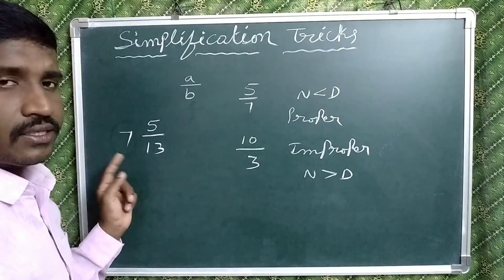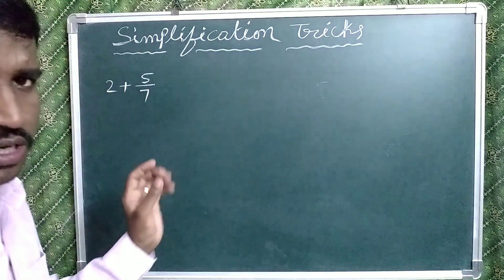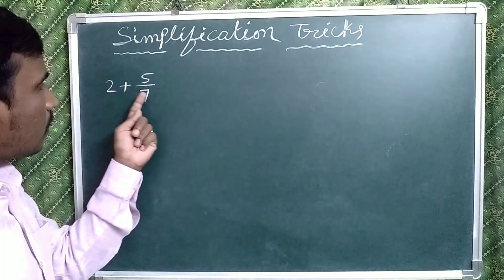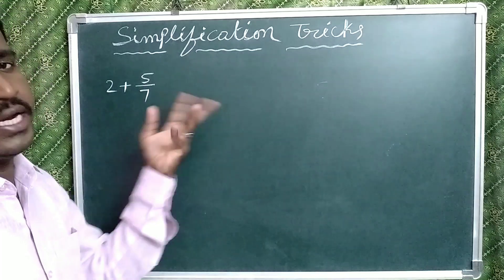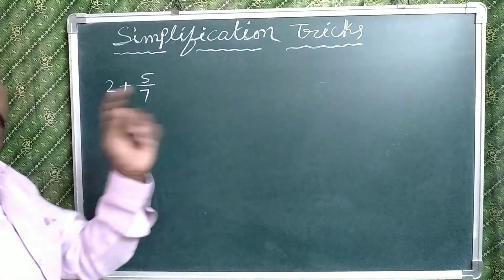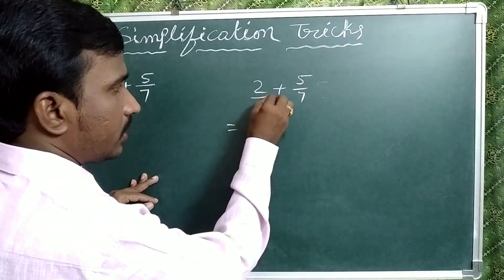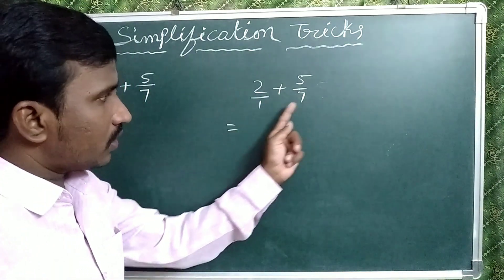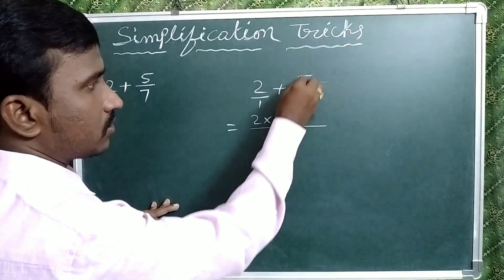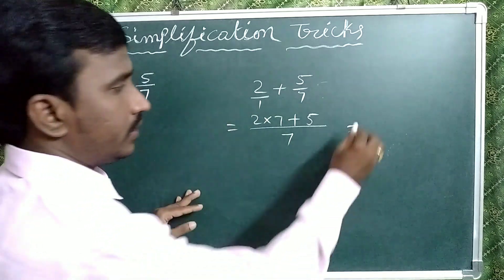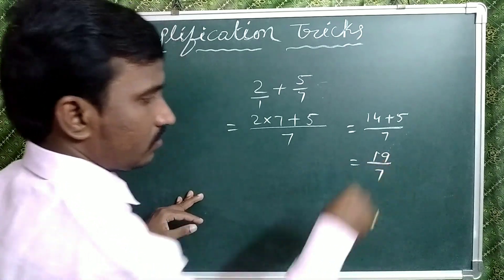Now let's discuss the shortcut for the first model. In this model we have one whole number and one proper fraction — whole number plus or minus proper fraction. How to solve these problems? For example: 2 plus 5 by 7. What is the denominator? 7. Take the LCM of 1 and 7, which is 7. Now 2 into 7 plus 5: 2 sevens are 14, so 14 plus 5 by 7 means 19 by 7.